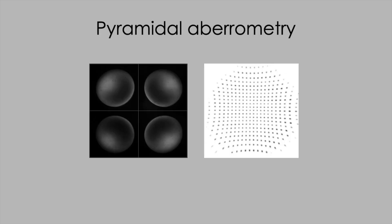Pyramidal aberrometry, which is the aberrometry method incorporated in the Schwind Amaris platform, may allow us to get a reliable wavefront scan sequence for more irregular corneas. This is because it avoids the problem of spot crossover inherent in earlier Hartmann-Shack sensors, where the locus sampled over the pupil is read by the neighbouring sensor beyond a certain range of aberration. In pyramidal aberrometry, the light emergent from the pupil is split into four images and differences in light intensity between these images are used to derive wavefront information, eliminating the problem of spot crossover. We're hopeful this will enable us to base more of our treatments on wavefront scanning rather than topography.